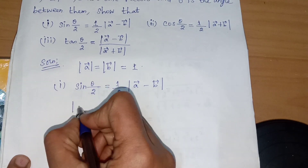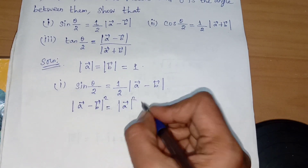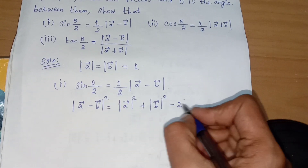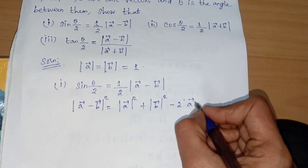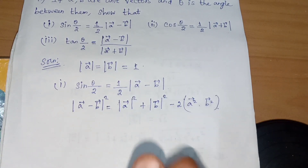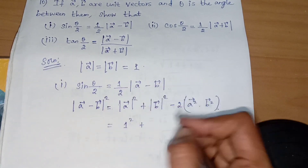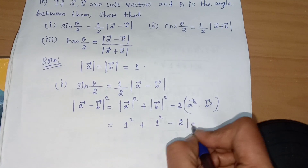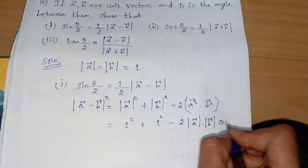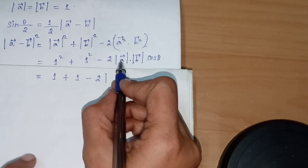|A vector minus B vector|² equals |A vector|² plus |B vector|² minus 2 times A vector dot B vector. Since |A vector| equals |B vector| equals 1, this becomes 1² plus 1² minus 2 times |A vector| times |B vector| times cos θ, which equals 1 plus 1 minus 2 times 1 times 1 times cos θ.